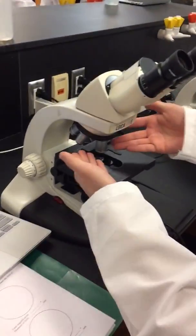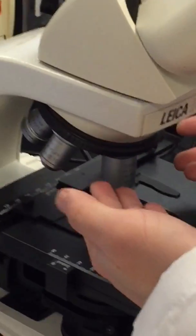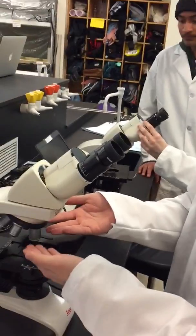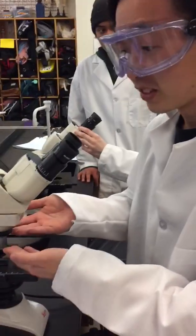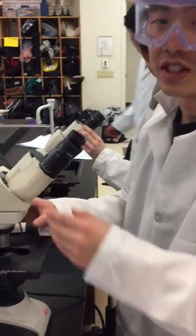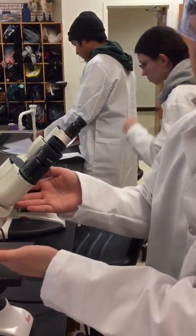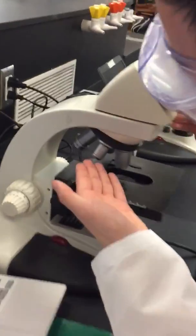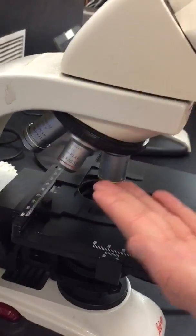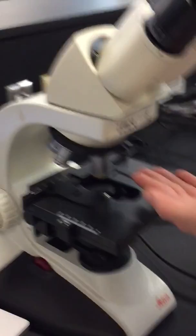These three long tube things here that look like giant AAA batteries are ocular lenses and they all have different magnifications. Like this red one here has the smallest because it is a 4 by 0.1 times magnification.